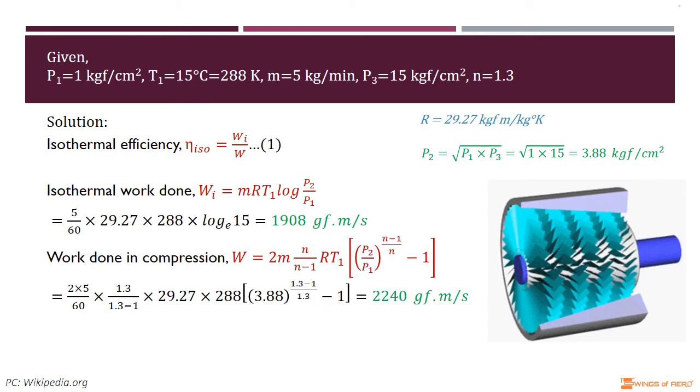Next, find the work done in compression. For isothermal compression, the work done is minimum; however, this is difficult to realize in practice. Compression follows the law PV^n = constant. Then total work done per cycle is given by W = 2ṁ(n/(n-1))RT₁[(P₂/P₁)^((n-1)/n) - 1]. Here, all values are known. Substitute those values and simplify.